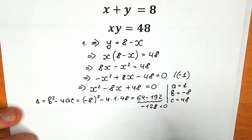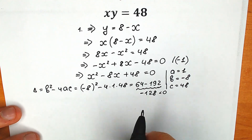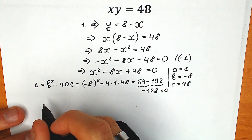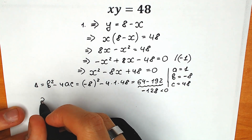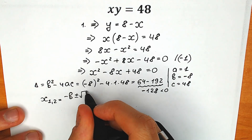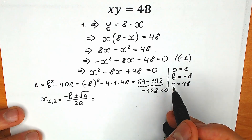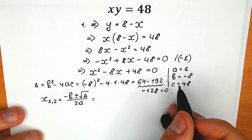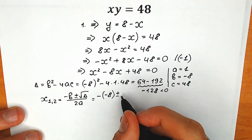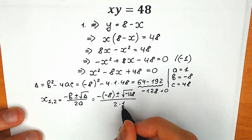Our discriminant is less than zero, so it means that we have complex roots. Let's solve this question completely and find x₁ and x₂. So x₁ and x₂ equal to (minus b ± √D) / (2a). Let's plug in: minus b, but b equals minus 8, so we get plus minus square root of minus 128, all over 2 times 1.